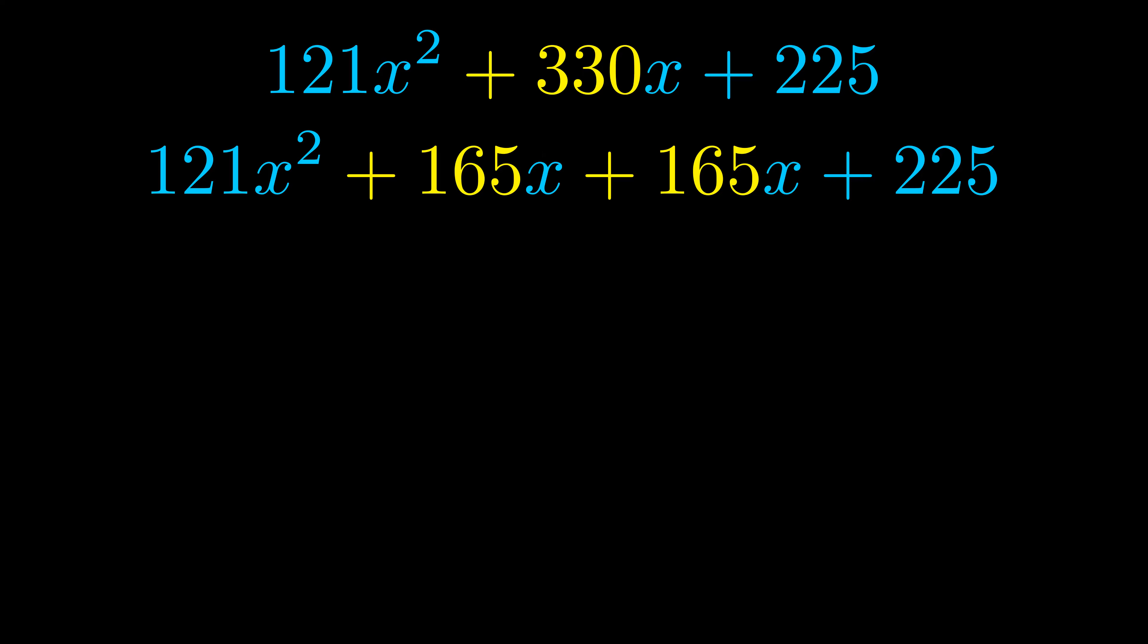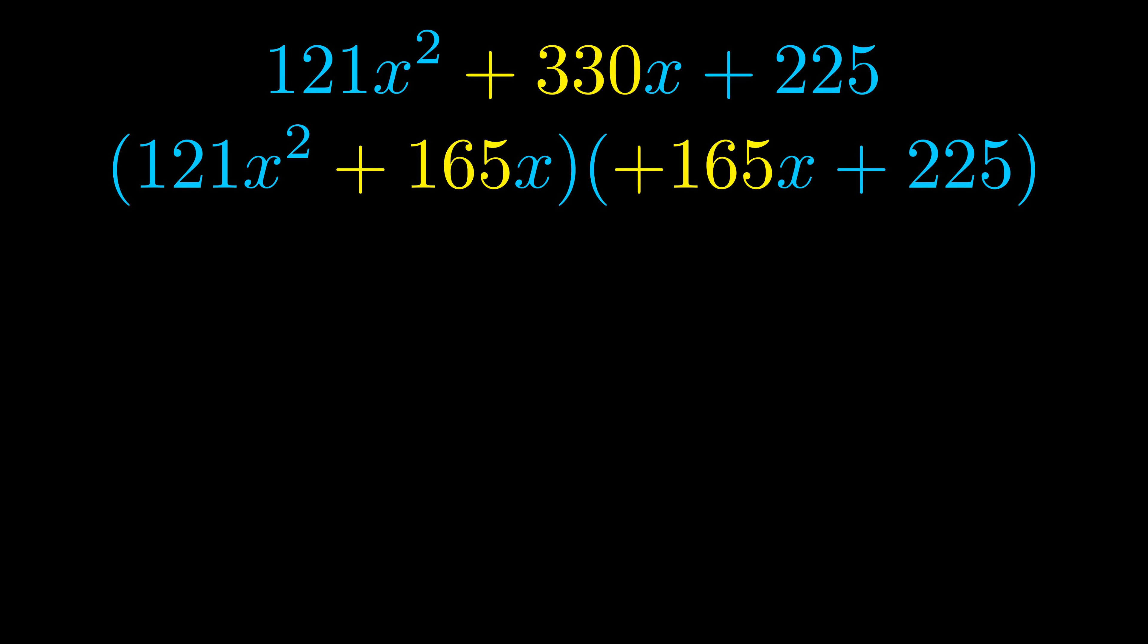Once we've done this, we go ahead and we put parentheses around the first term and the last term. And we do that so that we can take the greatest common factor out of both terms. We can see the greatest common factor is now outside in green. Notice also how what remains inside of the parentheses is the same in both cases. The blue values are the same.